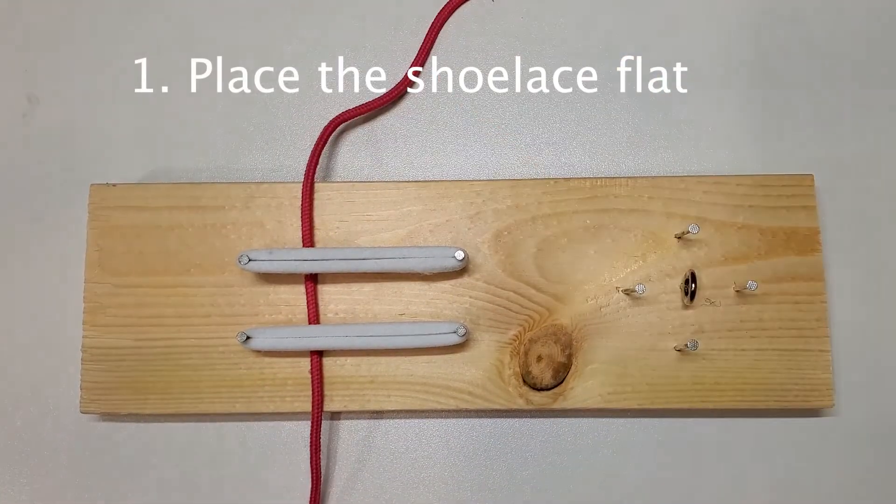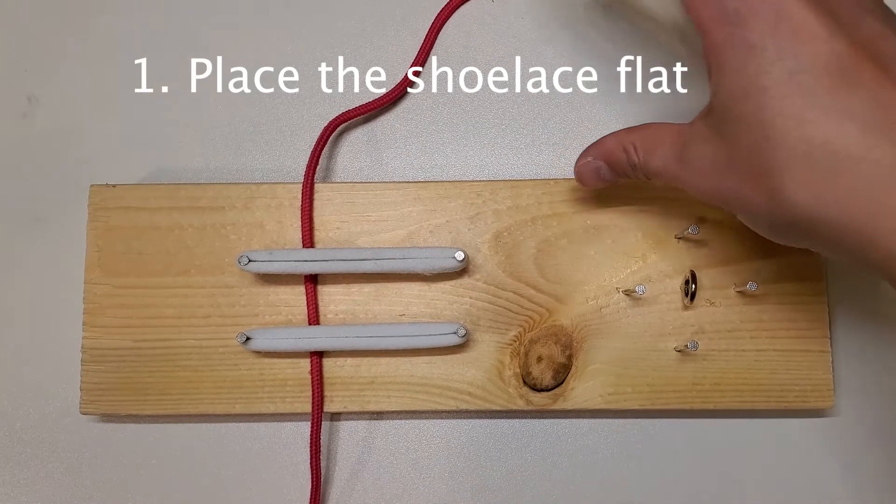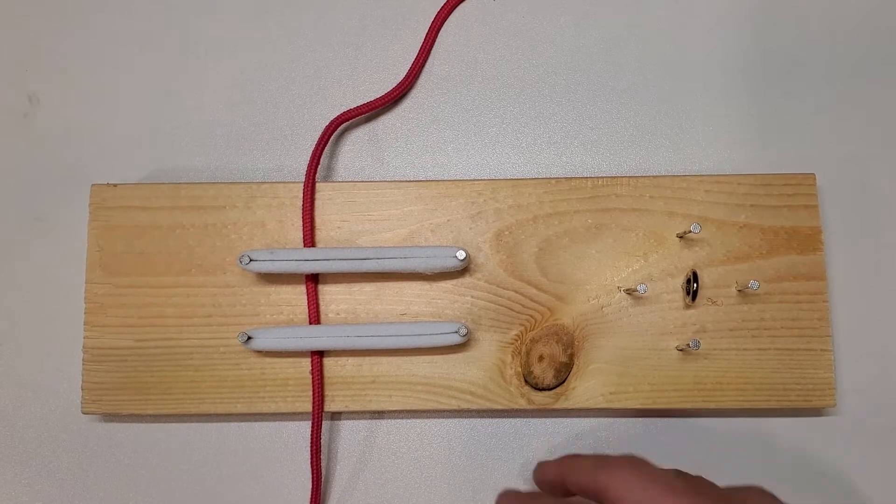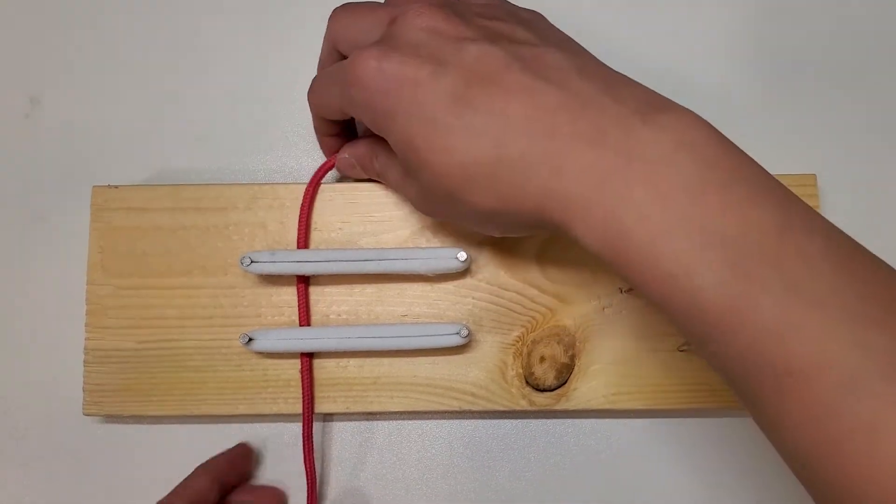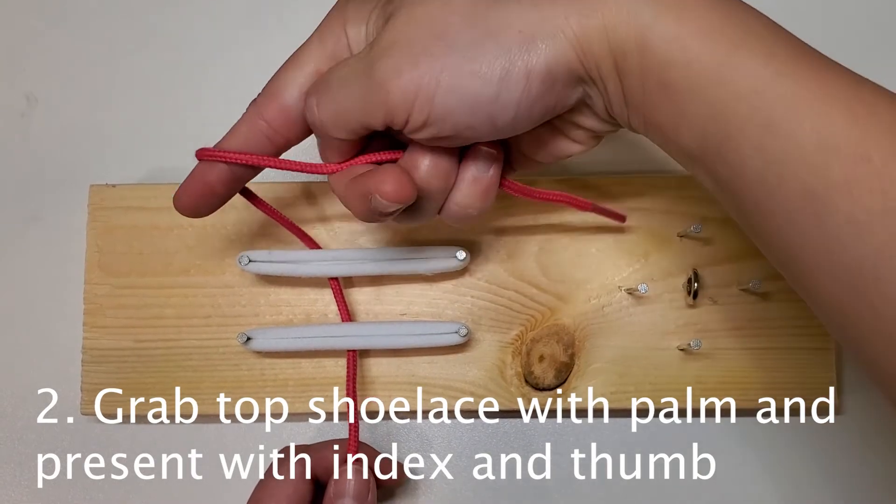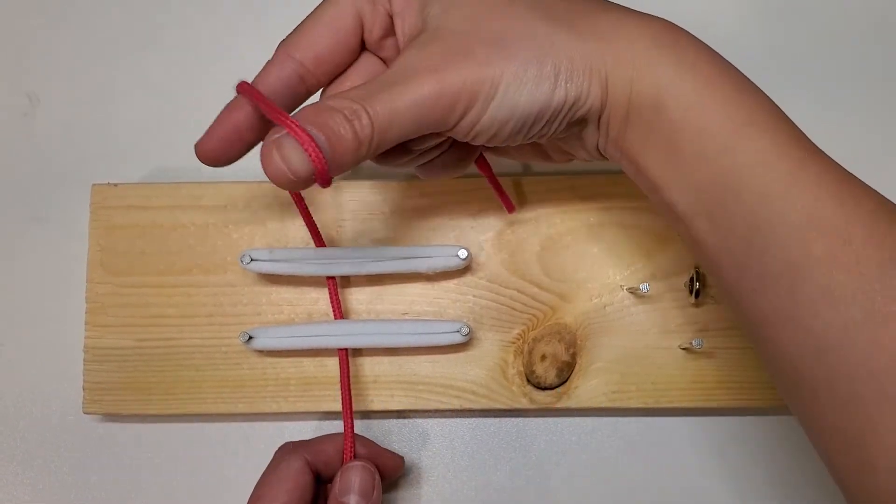If you flatten out your shoelace, you'll remember from our two-handed video that this is the top, and here is the bottom. So our free end's at the top. That will mean that we will present our shoelace to ourself with our index and thumb.